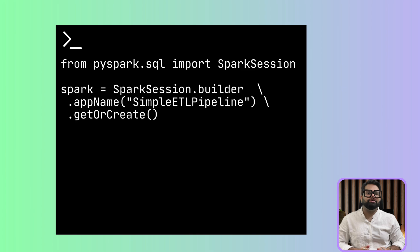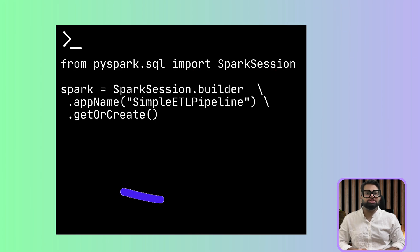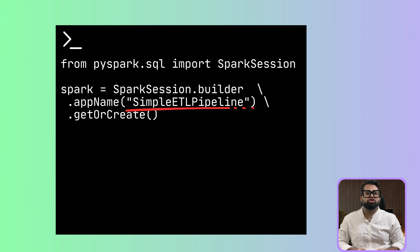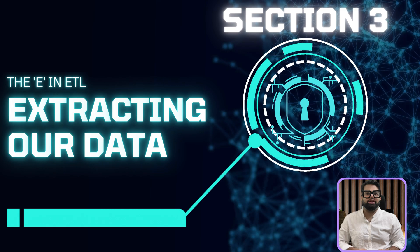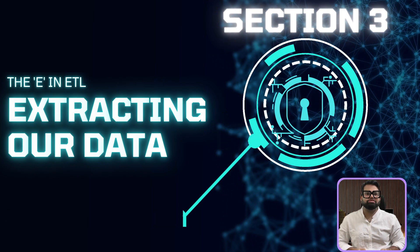Here is the code to create the session. We import SparkSession and then use a standard builder pattern to create our spark object. We give our job a name — 'Simple ETL Pipeline' — which is useful for tracking it in a real production environment. The dot getOrCreate command is clever: it either creates a new session or returns the existing one. With this spark object ready, we can start our ETL process. First up is Extract.